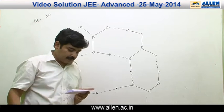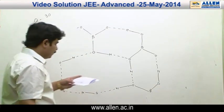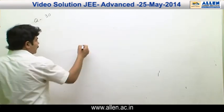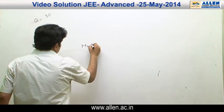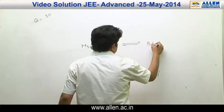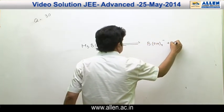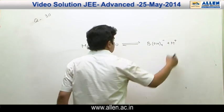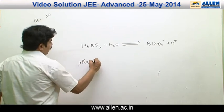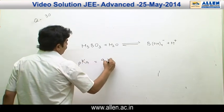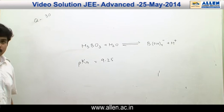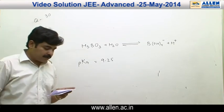That is, C option is also incorrect. And the last option is it is a weak electrolyte in water. When boric acid is added in water, then it ionizes. But the pKa value of boric acid is 9.25. That is, it acts as a weak acid as well as weak electrolyte in water. That is, the option D is correct.